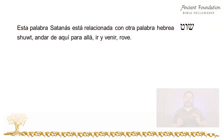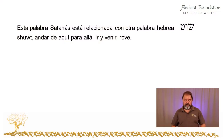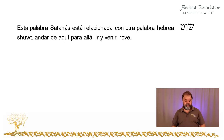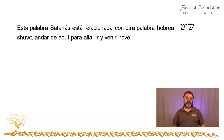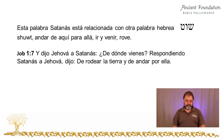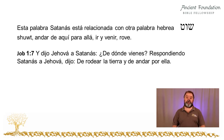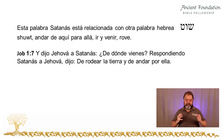The word Satan is related to another Hebrew word, Shoot, spelt with a shin, a vav, and a tet. It means to go about, to go to and fro, to rove. We see this word used in Job 1:7: And Yahweh said to Satan, from where do you come? So Satan answered Yahweh and said, from going to and fro on the earth, and from walking back and forth on it. Here we literally see these meanings — Satan and Shoot — being used together.